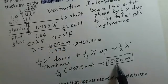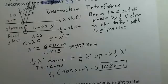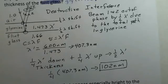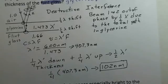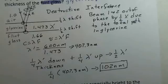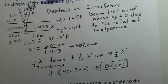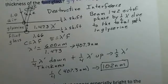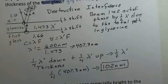Here's our thickness. If going down and coming back up equals one full wavelength, then the wavelength lambda prime equals twice the thickness, giving us approximately 204 nanometers in the glycerin. To find the wavelength in air: since lambda prime equals lambda over n, the wavelength in air equals n times lambda prime, which is 1.473 times 204 nanometers.